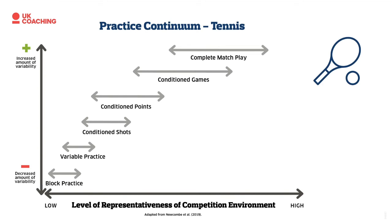We've included examples from different sports. For tennis, at the top end is complete match play — as close to the performance environment as possible, with games, sets, points, tiebreaks, and elimination based on results to recreate tournament play. Moving down through conditioned games, conditioning points, and then into conditioned shots, variable practice, and block practice — getting more specific with technical elements as we head toward the bottom.